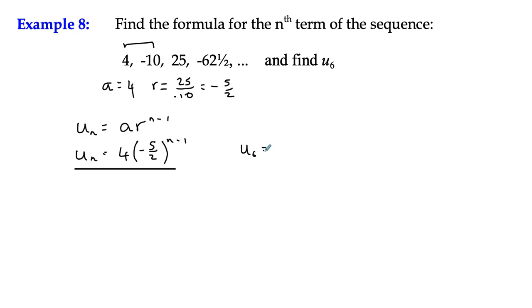So u6 is going to be 4 multiplied by negative 5 over 2. And n is 6. So therefore 6 minus 1 is going to be 5. Now at this stage, that's not a calculation you would be expected to do without a calculator. So I would suggest that you do so.